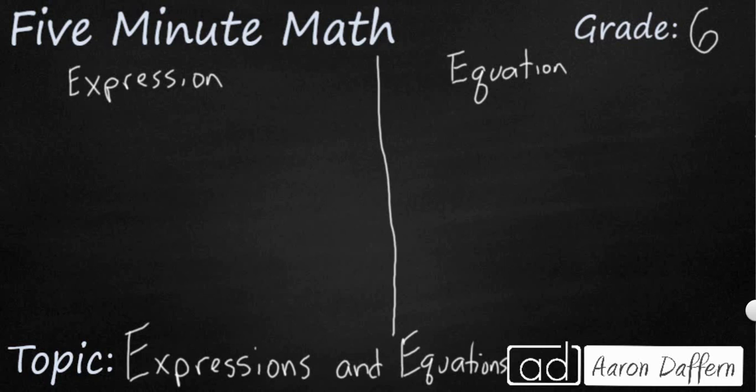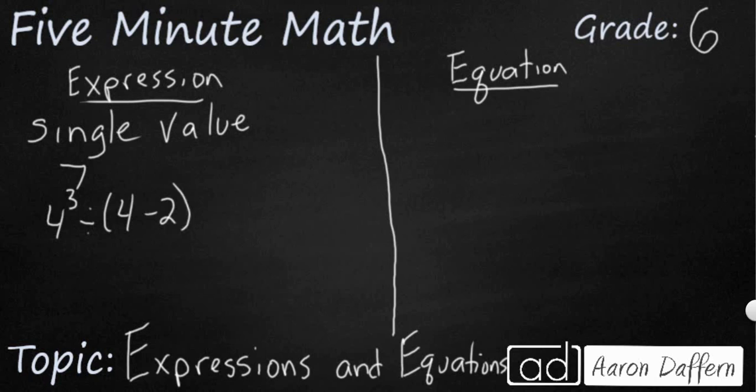Now you've heard these two phrases, expression and equation, and you might think they mean the same thing, but in fact they are quite different things. An expression, no matter how big and how many operations it uses, represents a single value. So it could be something as simple as 7, it could be something as complex as 4 cubed divided by parentheses 4 minus 2. Both of these will simplify down to a single value, a single number.